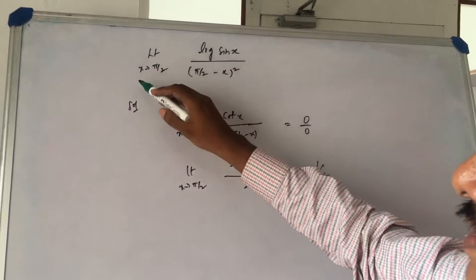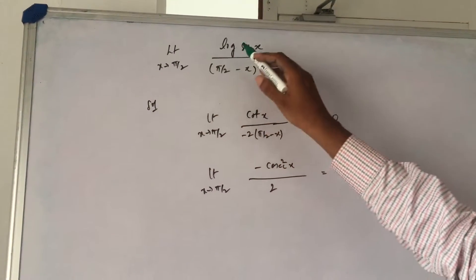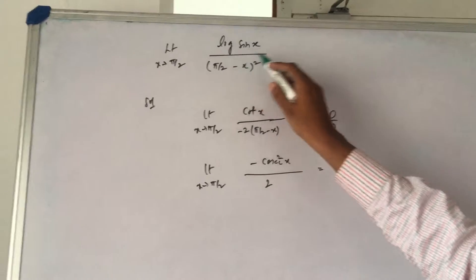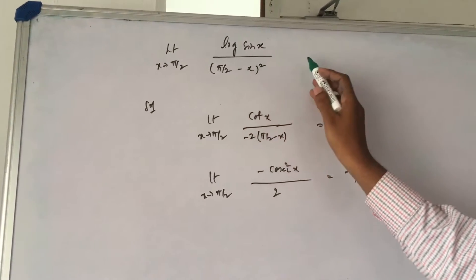Let us find the limit as x tends to π/2 for log sin x divided by (π/2 - x) whole square.